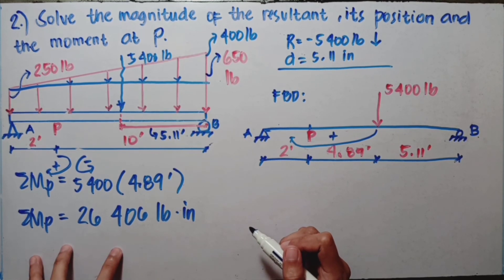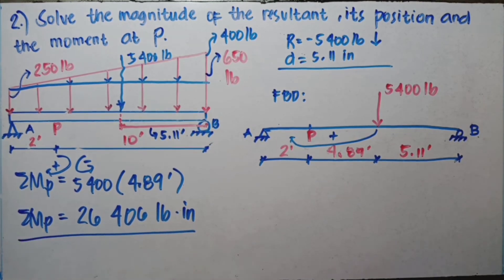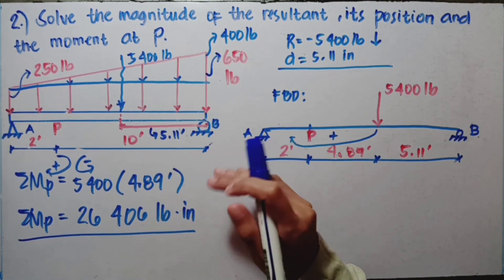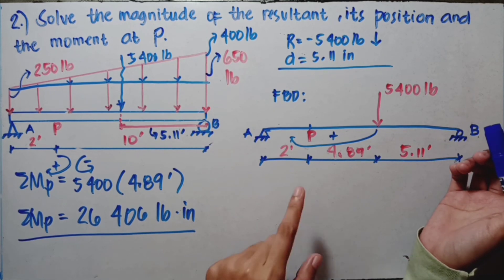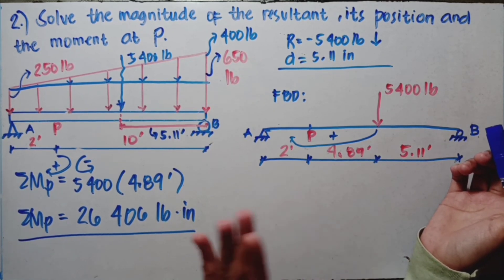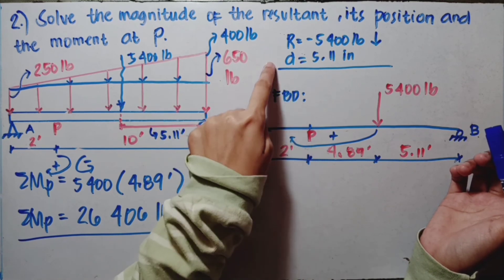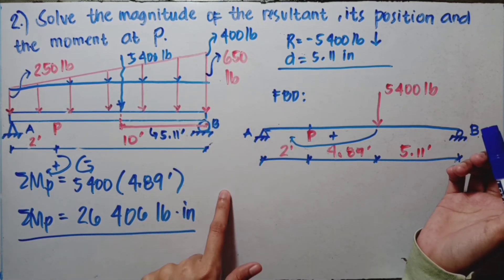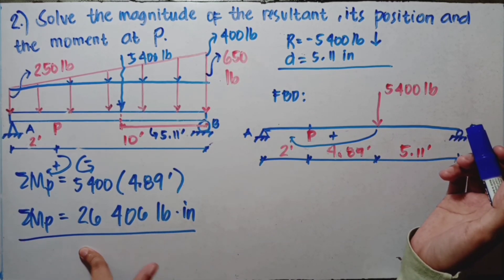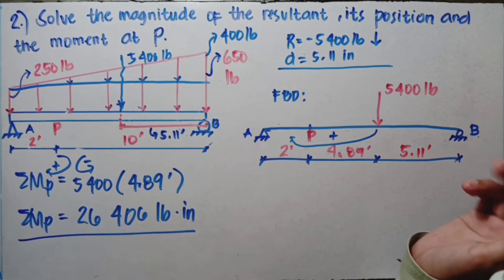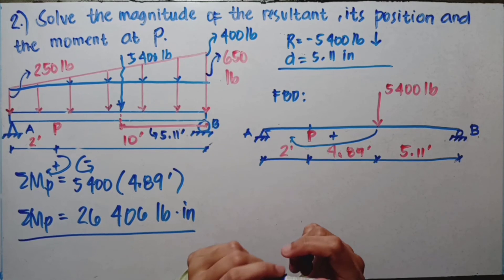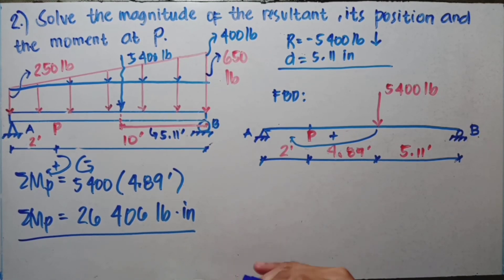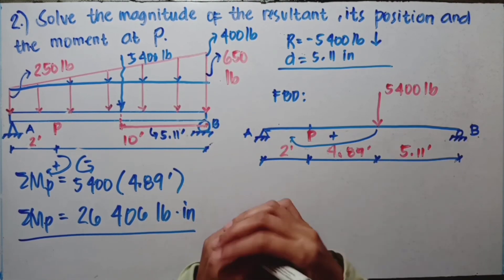That is our moment at P that we were looking for. So when problems ask for the moment at a certain point and parallel forces are given, it's better to first find the resultant, then use that to solve for the moment you need. We now have the magnitude and position of the resultant — 5.11 inches — and also the moment at P, which is 26,406 pound-inches. If you have any questions about this topic, you can comment below and I'll try my best to answer. Thank you for watching.